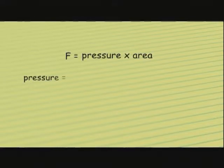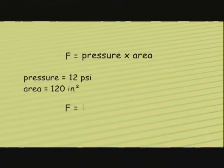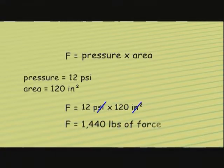Next, we will look at force. Force is equal to mass times acceleration or pressure times area. If we have a pressure of 12 PSI over a surface area of 120 square inches, what is the force? Using our equation, 12 PSI times 120 inches - the inches cancel and that leaves us with 1,440 pounds of force on that particular area.